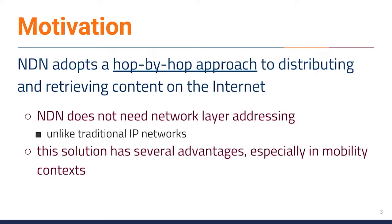Instead of using the traditional end-to-end IP-based communication, NDN adopts a hop-by-hop approach to distributing and retrieving content. NDN does not need network layer addressing but relies on names to request the desired content. This approach has several advantages, especially in mobility contexts. When it comes to vehicles as end-users, this architecture has been promoted to overcome the intrinsic dynamic and challenging scenarios of wireless networks, and is well suited to the Internet of Vehicles through different solutions based on vehicular NDN.